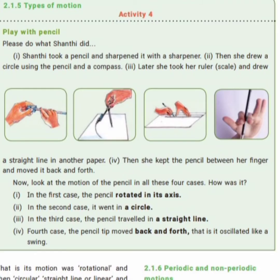Types of motion. When we sharpen a pencil, the pencil rotates on its axis — that is rotational motion. When we use a compass to draw a circle, the pencil goes in a circle — circular motion. When we use a ruler, the pencil travels in a straight line — linear motion. When we hold a pencil between two fingers and shake it, the pencil tip moves back and forth — that is oscillatory motion, like a swing.